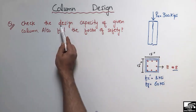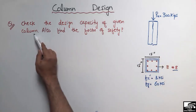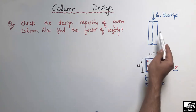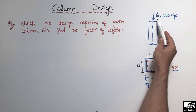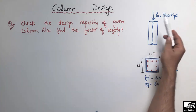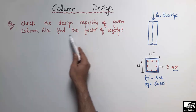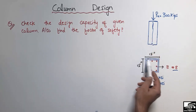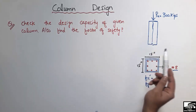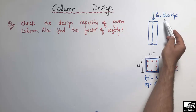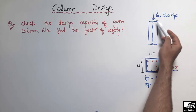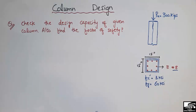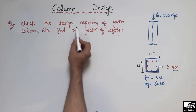We have to check the design capacity of this column — whether the capacity of this column is greater than the applied load or not — and also find the factor of safety, that is, how much this column is safe according to the given factored load.